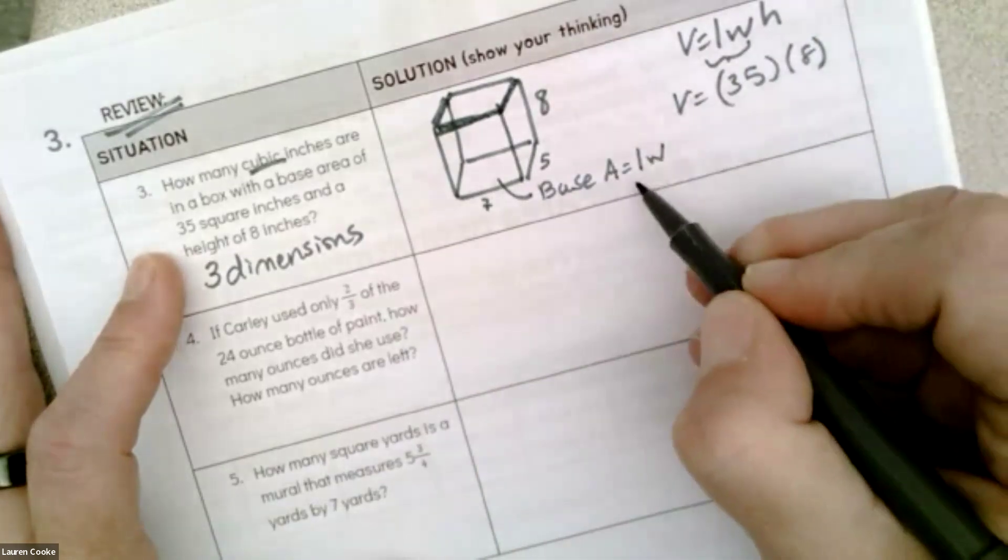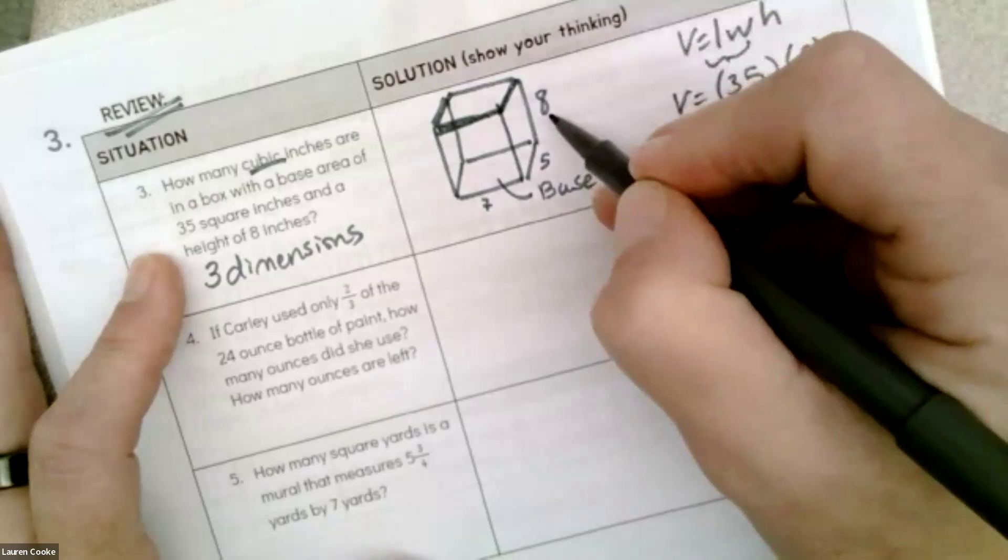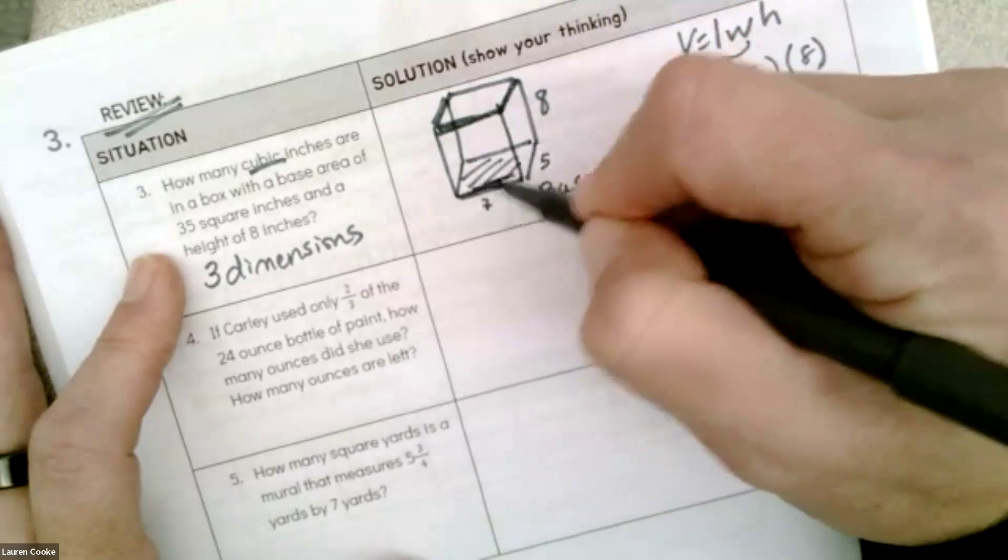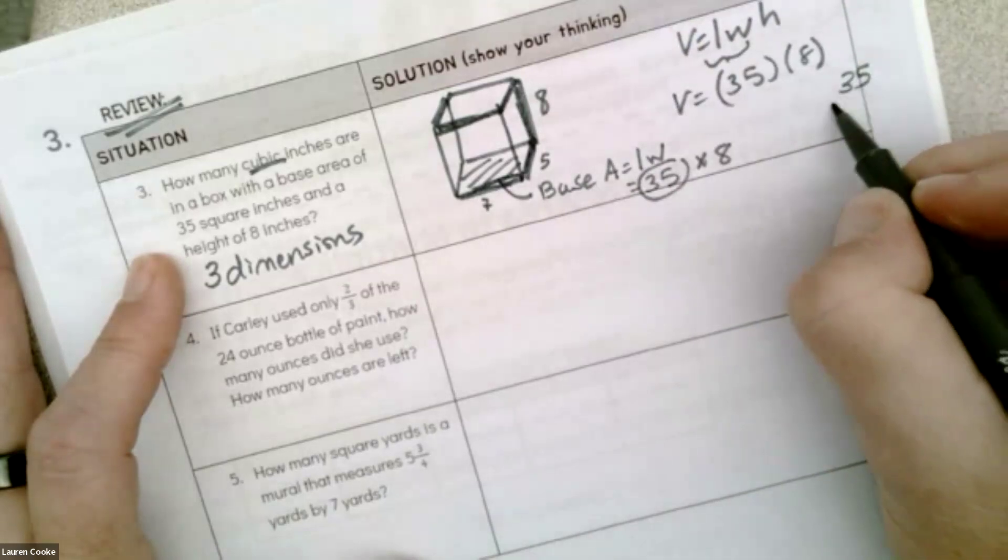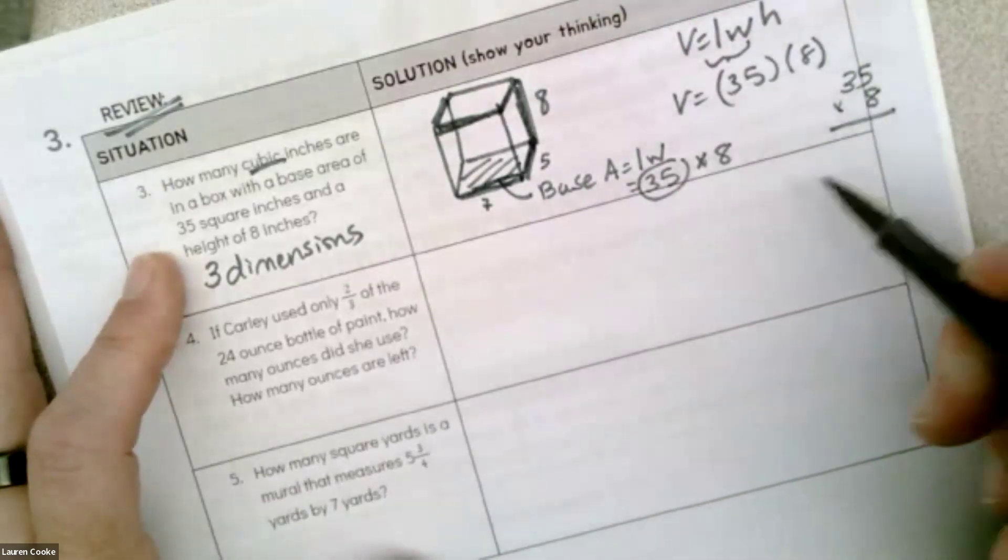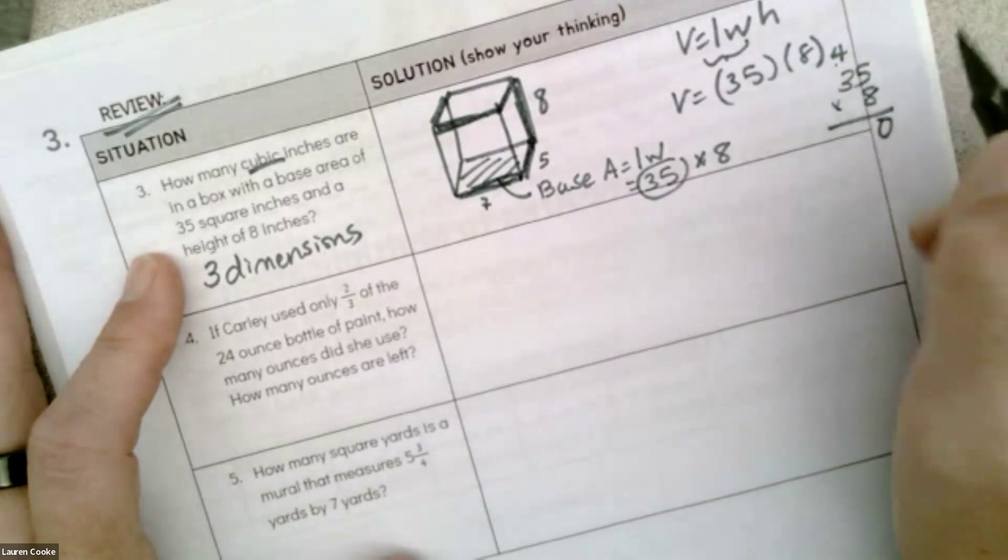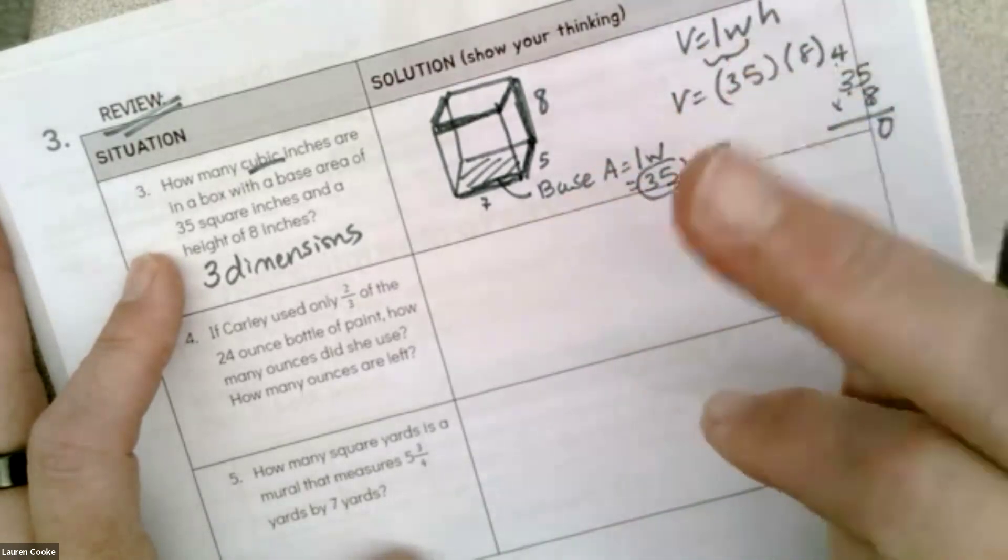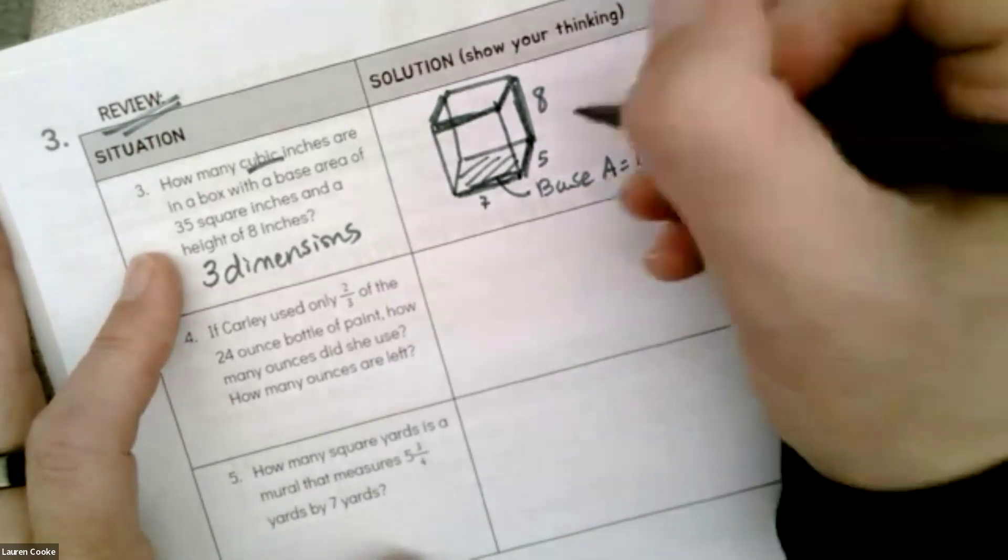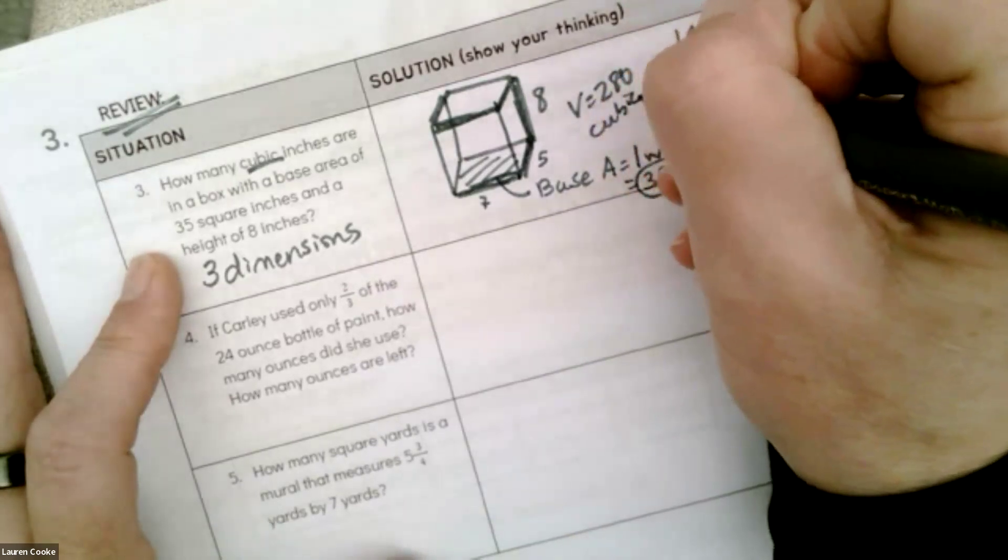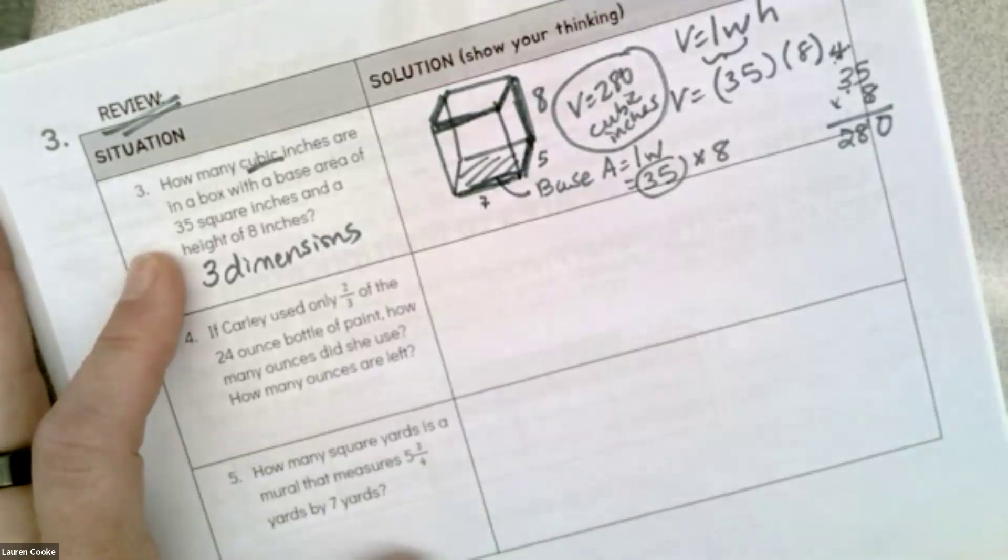The base is just a rectangle, so that's length times width, and that is 35. Then we have 35 times 8, which is the height. So it's length, width, height. Now I'm going to find 35 times 8. 8 times 5 is 40. I'm going to drop the number to the right, bump the number to the left. 8 times 3 is 24, 25, 26, 27, 28—280. So my volume is 280 cubic inches, and I'm going to circle that.